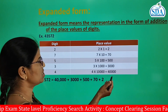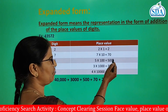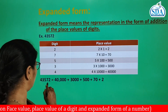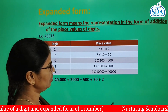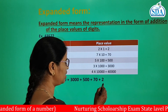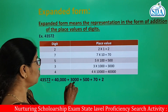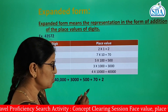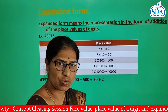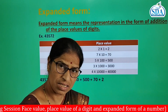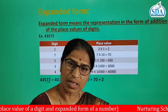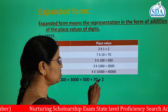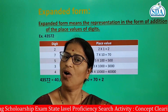The expanded form is written as: 40,000 + 3,000 + 500 + 70 + 2. Or you can start from the right, that is from the units place: 2 + 70 + 500 + 3,000 + 40,000, which gives us 43,572. So the expanded form of a number is nothing but the representation of that number in the form of addition of the place values of each digit.